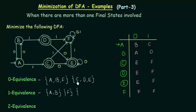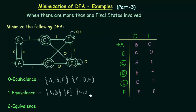Now let me check C, D and E. C and D on getting input zero go to E and E — same state, fine. On input one they go to F and F — again same state, fine. So C and D are one equivalent. Now let me check if E is one equivalent to C and D — checking E with D. D and E on input zero go to E and E, same state. On input one they go to F and F, again same state. So D and E are also one equivalent, meaning C, D and E are all one equivalent to each other. Let me put them in the same set.